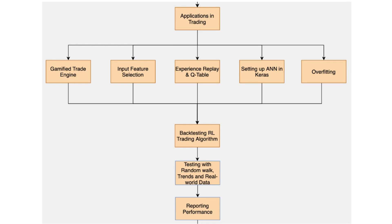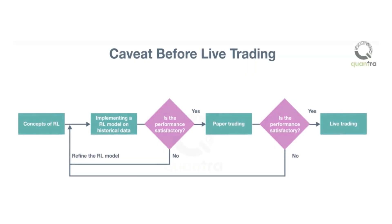By the end of the course, you will be able to combine all reinforcement learning components to build and backtest trading strategies. You will also be able to evaluate your reinforcement learning system by first validating it on known and simple patterns and later on exploring the algorithm's performance on real-world data. But before rushing into live trading, it is advisable to start by going paper trading and, even more crucially, refine your reinforcement learning model until the performance is acceptable. You can do so by tweaking the reward system, setting up different structures of artificial neural network agents and trying different financial instruments.